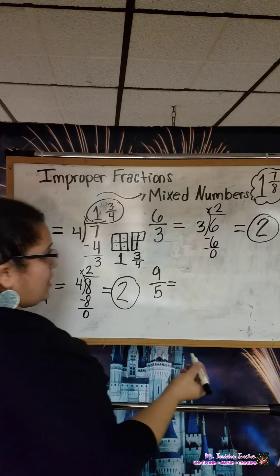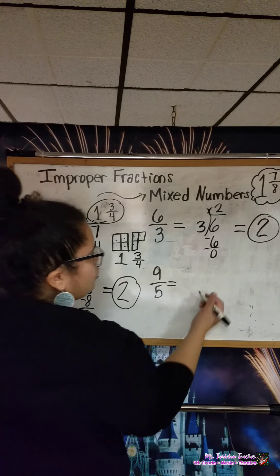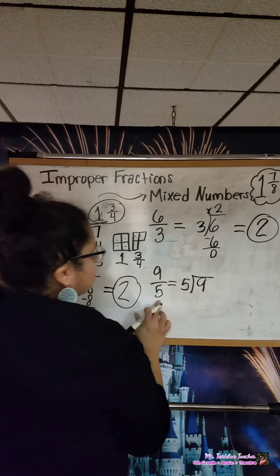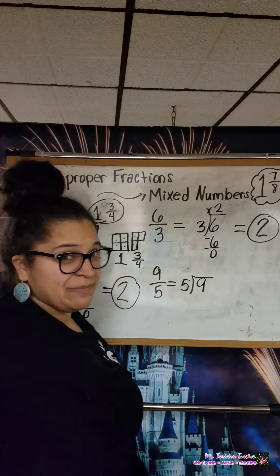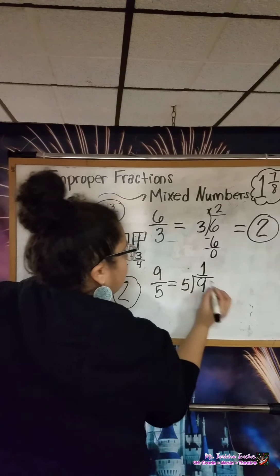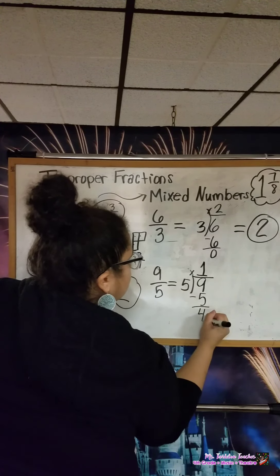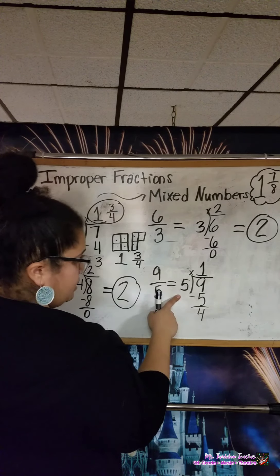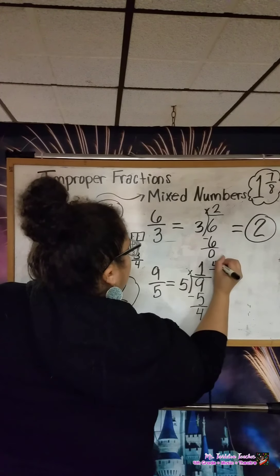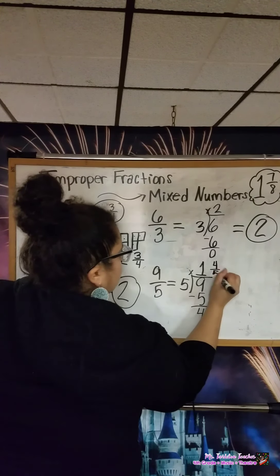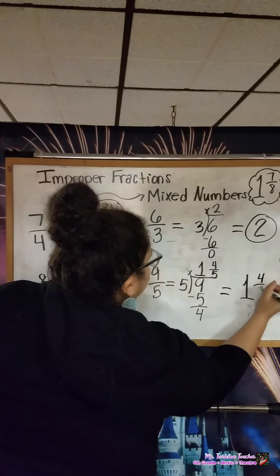Let's look at one more from today's worksheet. 9 fifths, or 9 over 5. Treating our fraction bar like a division sign — 9 is my dividend and 5 is my divisor. 9 divided by 5: 5 goes into 9 once without going over. Multiply: 1 times 5 equals 5. Subtract: 9 minus 5 is 4. Compare: 4 is less than 5. Nothing to bring down, so we write our remainder as a fraction — 4 goes in the numerator, 5 in the denominator. So 9 fifths equals 1 and 4 fifths.